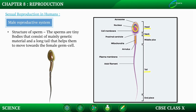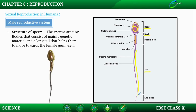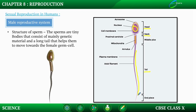The function of the tail is to help the sperm move towards the female germ cell for fertilization. This is the structure of the male reproductive system.